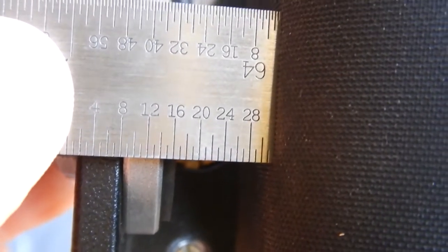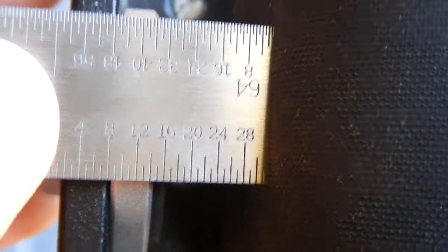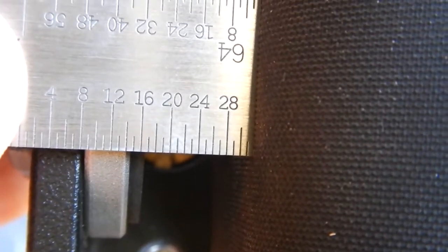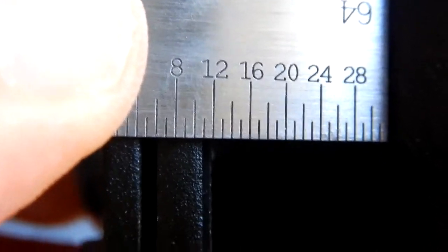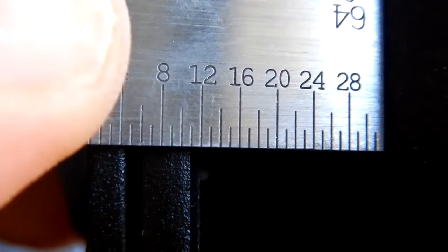Here's the Manfrotto with the clamp all the way out to see the capacity, and here you see the Oban - and it has a wider jaw capacity.